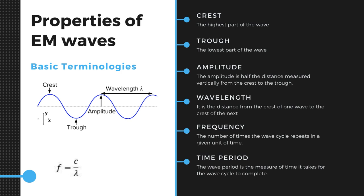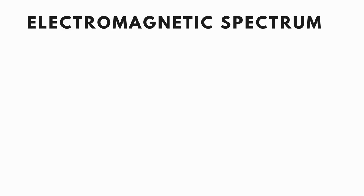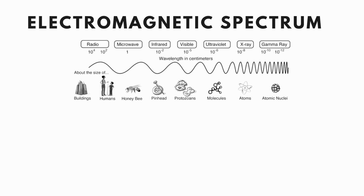Now the relationship between them is by the formula: frequency is equal to C upon lambda, where C is the speed of light which is 3 into 10 to the power 8 meters per second, and lambda represents the wavelength. Frequency is also related to time period by the formula: frequency is equal to 1 upon time period.